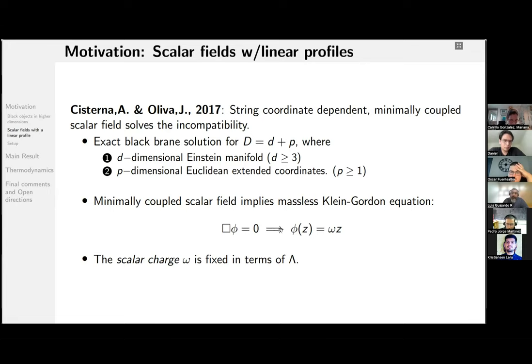the fact that the minimally coupled scalar field implies the Klein-Gordon massless equation, which at the end of the day, since the scalar field depends only on the string coordinate, will induce a linear profile for the scalar field. Here, there is a second integration constant, but you can get rid of it by diffeomorphisms. The point is that this ω, which in principle was an integration constant, gets fixed in terms of the cosmological constant.